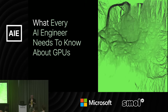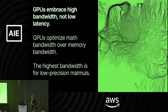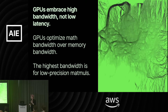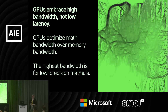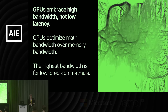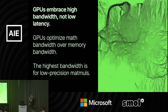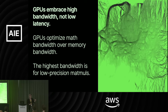So that's the why — a slight change or adjustment in what AI engineers should know about. Now, what is it that you need to know about this hardware in detail? The primary thing is that GPUs embrace high bandwidth, not low latency. That's the key feature of this hardware — similar with TPUs — and it distinguishes it from pretty much every other piece of hardware you're used to programming. In detail, they optimize for math bandwidth over memory bandwidth. You want to align yourself not to latency but to throughput, and within throughput focus on computational operations — specifically low-precision matrix-matrix multiplications, not just matrix-vector.